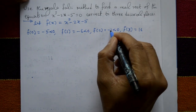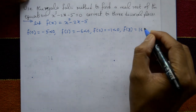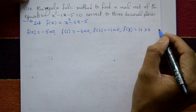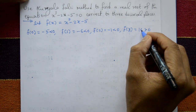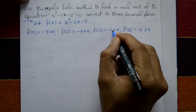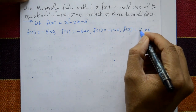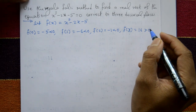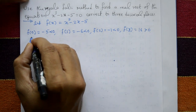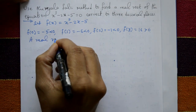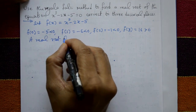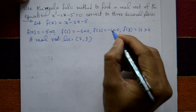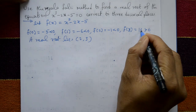f of 2 is minus 1, which is less than 0 but close to 0, and f of 3 is 16, which is greater than 0. Therefore, a real root lies between 2 and 3.